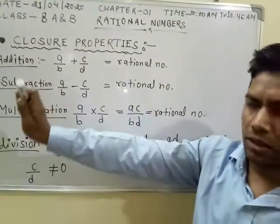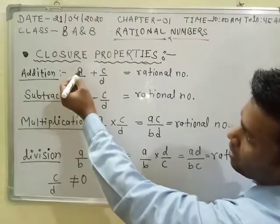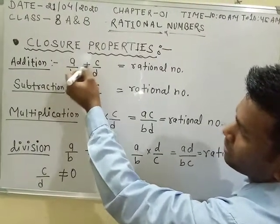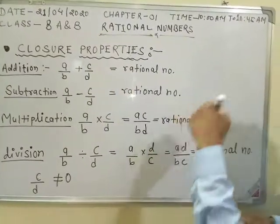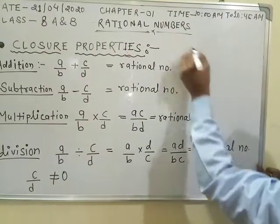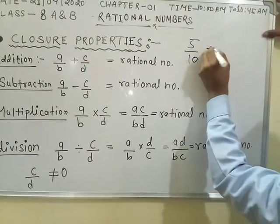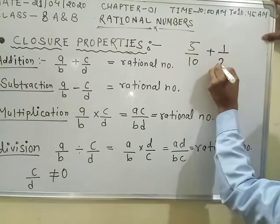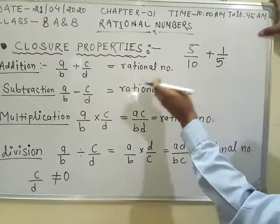As you're looking, a/b + c/d, the result will be a rational number. So I want to give an example like 5/10 + 1/5. When we add them, if the result is a rational number, then it's applicable.